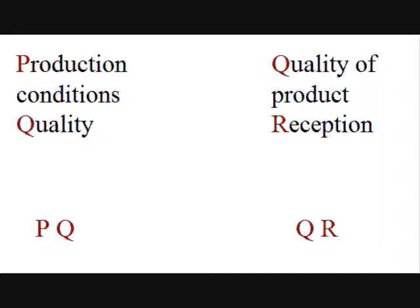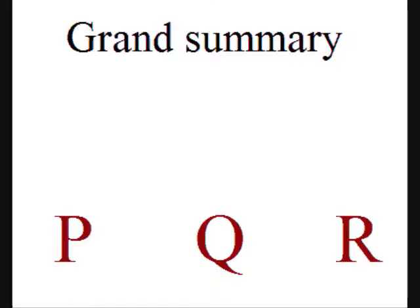That's 19 minutes — I've now got my final summary. What we have then is production conditions, and we have quality reception. Quality is in the middle, but it relates both to the production conditions and to the reception. The risk is that we just look at the reception and forget the production conditions. And therefore the grand summary is those three letters. Remember those letters and you can't go wrong. Now it's your turn.